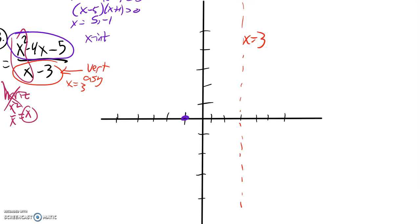So I know I have an intercept here at negative 1, 0, and then I have one here at 5, 0.